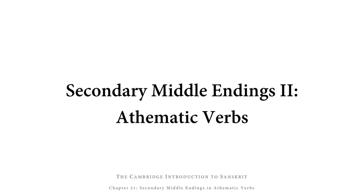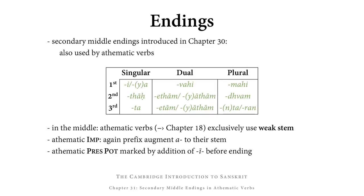Welcome to the video for Chapter 31 of the Cambridge Introduction to Sanskrit. We're going to tell you about secondary middle endings as they are used in athematic verbs. Chapter 30 introduced us to secondary middle endings, i.e. the endings that middle verbs use in the present potential and in the imperfect indicative. These endings are also used by athematic verbs. However, there are a few formal differences in how thematic and athematic verbs use these endings, and that's why we need to look at athematic verbs separately.